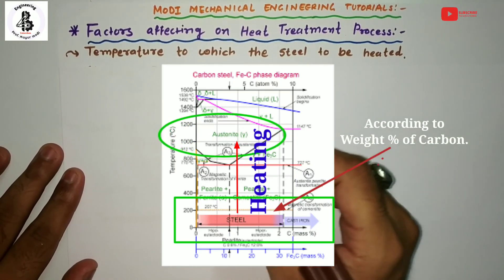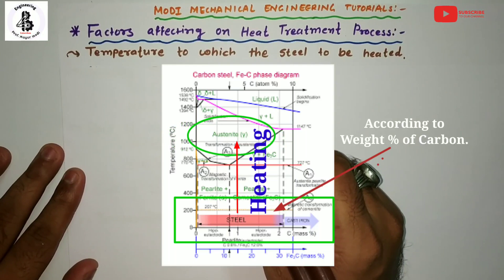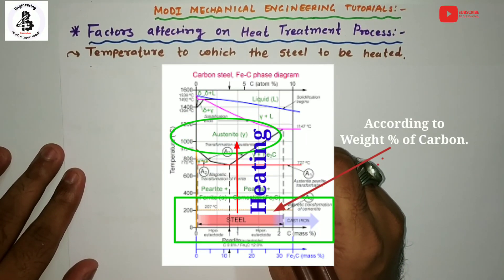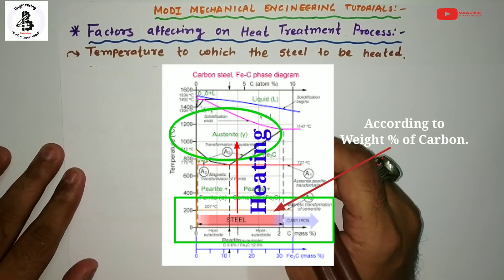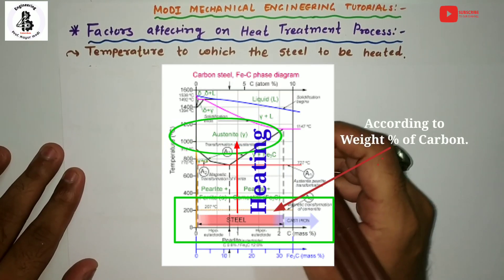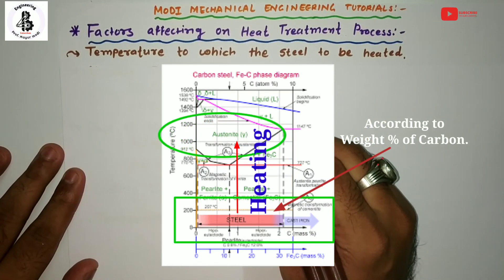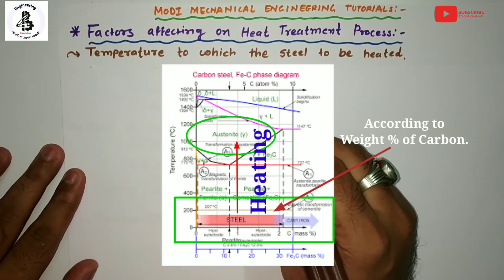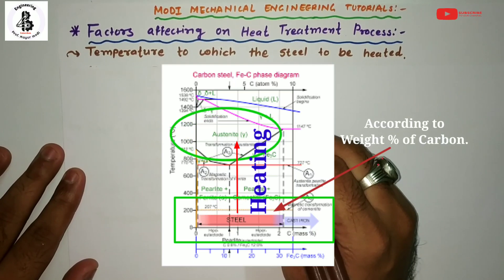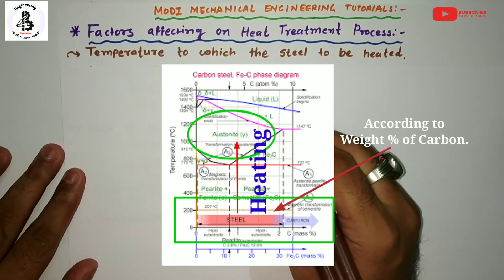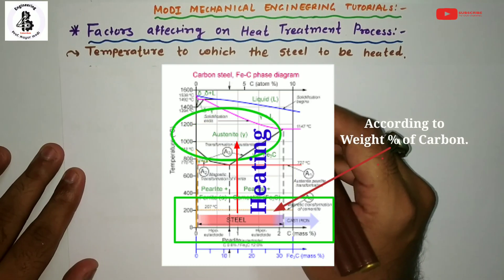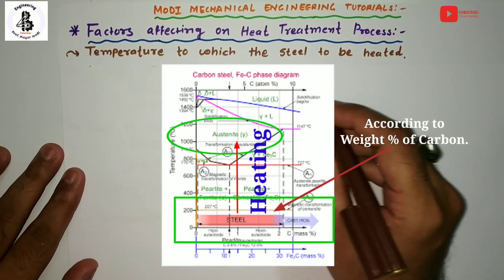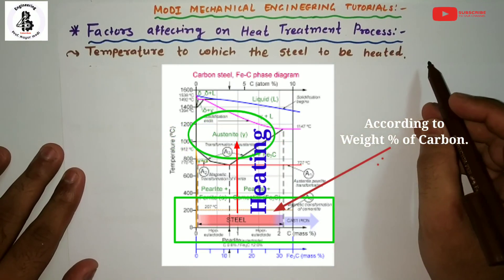In any heat treatment process, the first stage is the heating of your steel up to the austenitizing temperature. If you want to learn in detail about the basic heat treatment process, you will find a link in my description box. So the first factor is the temperature to which the steel is to be heated.